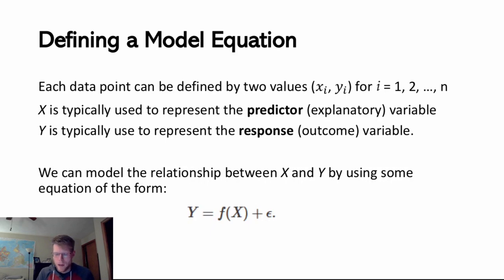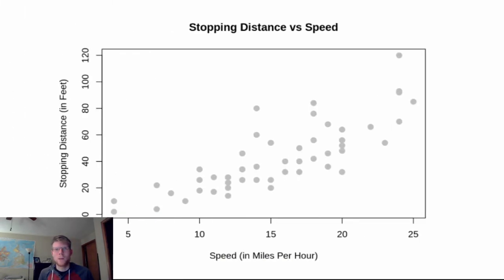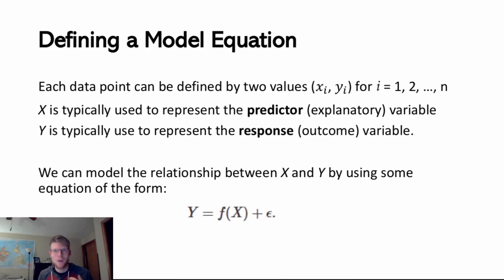That epsilon — the Greek letter epsilon — represents the error that I might have in my prediction. This is not algebra where I have some kind of perfect relationship between two variables. Instead, I have a slightly messy relationship. Whatever that equation is, it's not a perfect relationship — there are still going to be other things that affect stopping distance besides speed. So there is going to be some function of x plus some level of error that equals y.